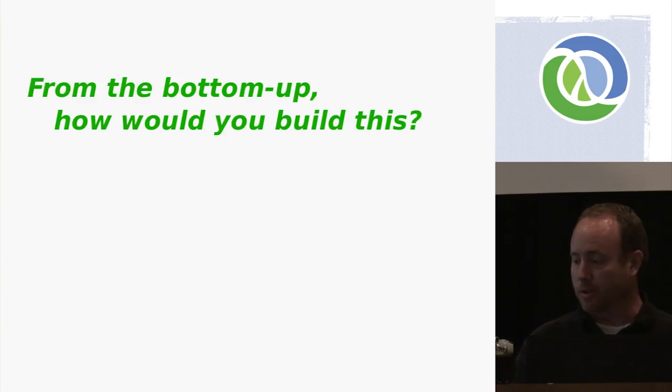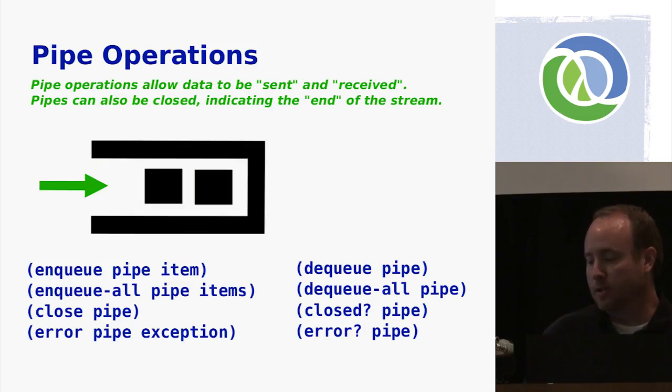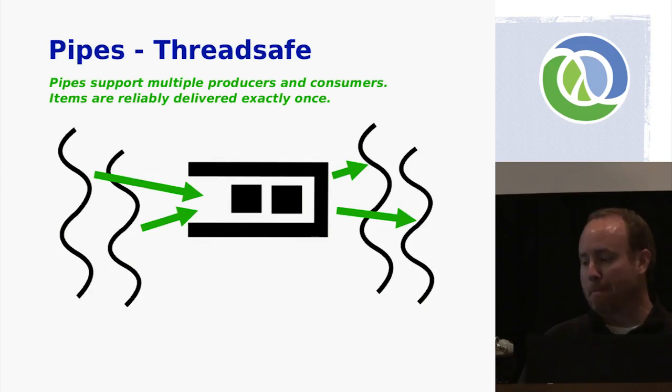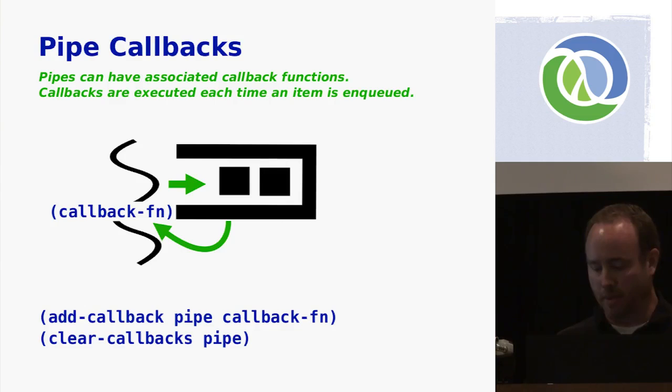That's the high-level view. Now I'm going to start from the bottom up and describe how we've actually built this. We have pipes at the bottom — the idea is you have a producer thread and a consumer thread that you're asynchronously passing data between. On the producer side you can enqueue data, close the pipe, and signal an error — that should sound familiar to the Unix side. On the consumer side you can get those out. Pipes are made to be multi-threaded, with many producers and many consumers, and the pipe will guarantee that each item is delivered once. We also have the ability to register a callback on a pipe — any time an item is enqueued, the calling thread will run the callback function before it returns.